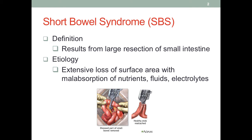However, when the section removed is too large, then the remaining section can no longer keep up. So we can say the etiology of SBS is due to the excessive loss of surface area caused by the surgical resection of a large portion of the small intestine. When we lose that much length, we are losing a lot of surface area, and as a consequence, we will have maldigestion and malabsorption.